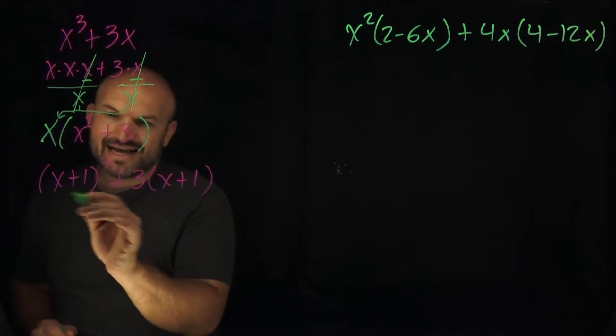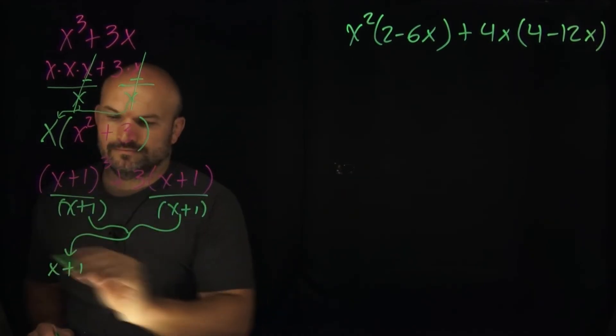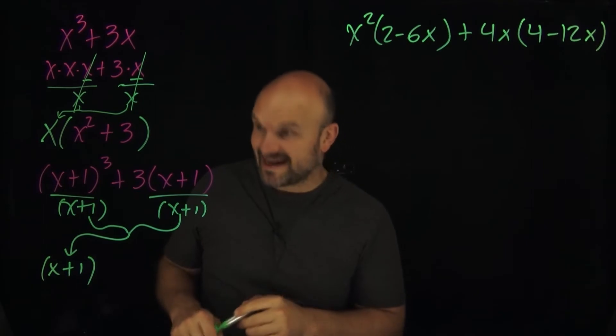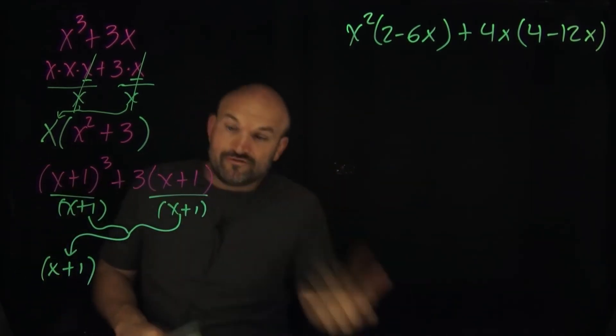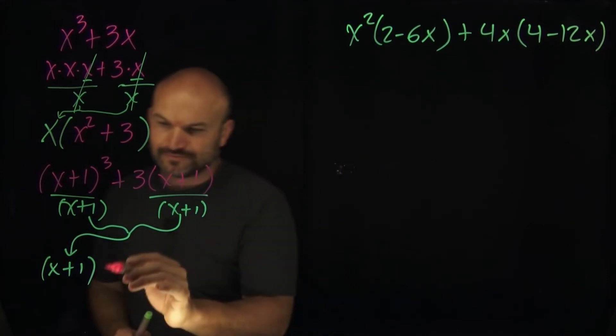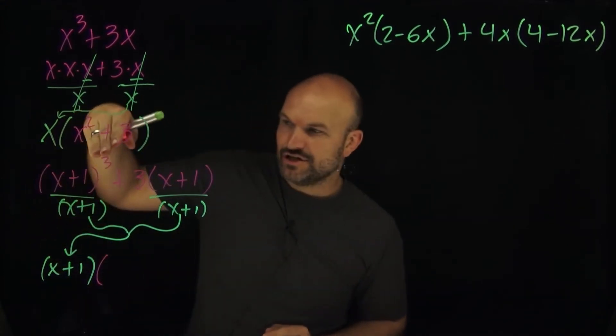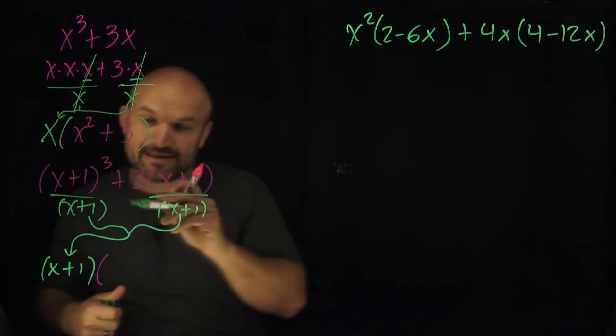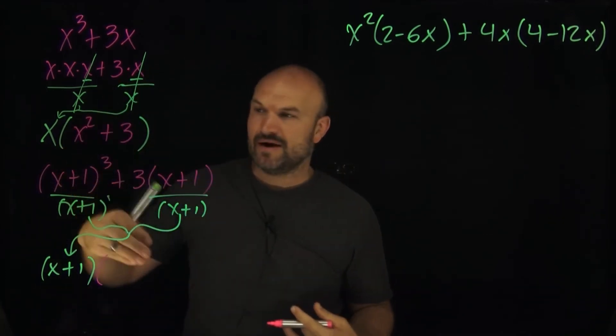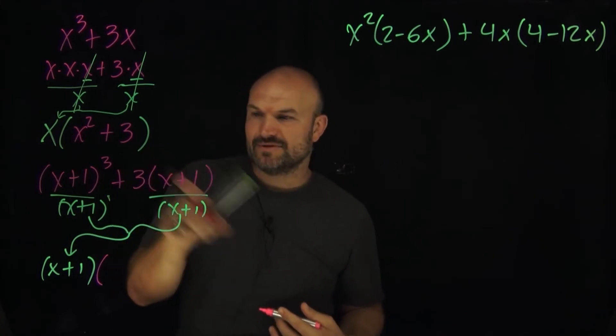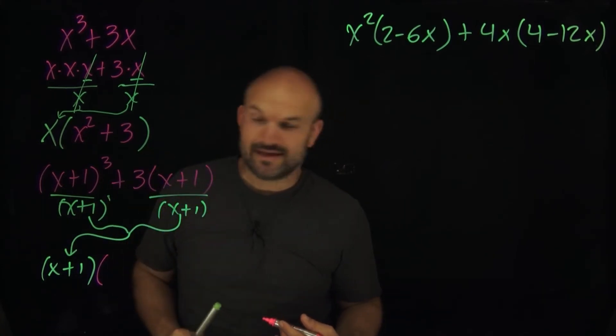So when I divide out this (x+1), it's going to be on the outside of the parentheses. Then I just need to figure out what was left over when I divided that out or factored it out. Well, I have x cubed divided by an x. Remember that you can technically think about that as x to the first power. So the rules of exponents say you subtract the powers, so that's going to be (x+1) squared. And then here the (x+1)s are going to just divide out, that's going to leave me with a 3.